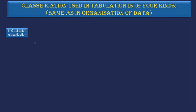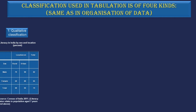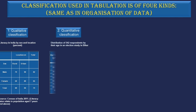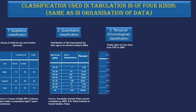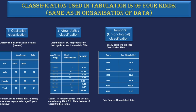1. Qualitative Classification (e.g., Male, Female, Rural, Urban). 2. Quantitative Classification. 3. Temporal or Chronological Classification. 4. Geographical or Spatial Classification.